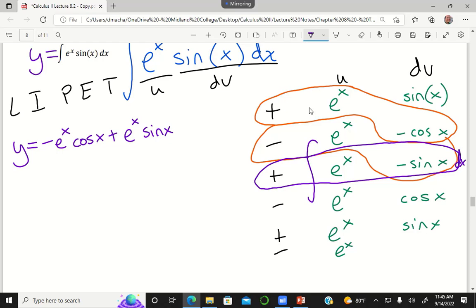Which means, okay, my answer is going to be that negative e to the x cosine x plus, because two negatives make a positive, e to the x sine x. Now, I'm going to write plus this purple flat snake antiderivative e to the x times negative sine x.